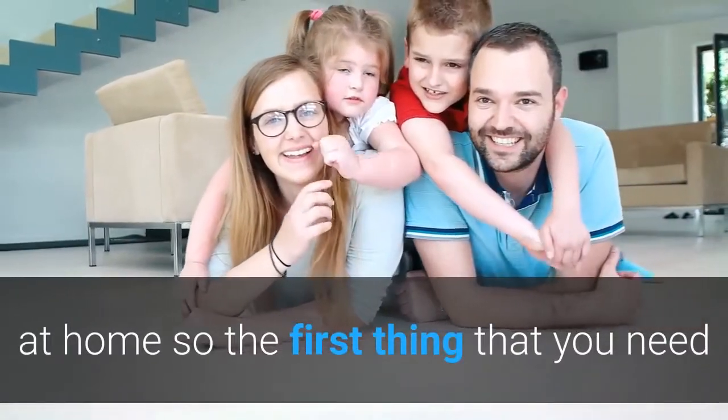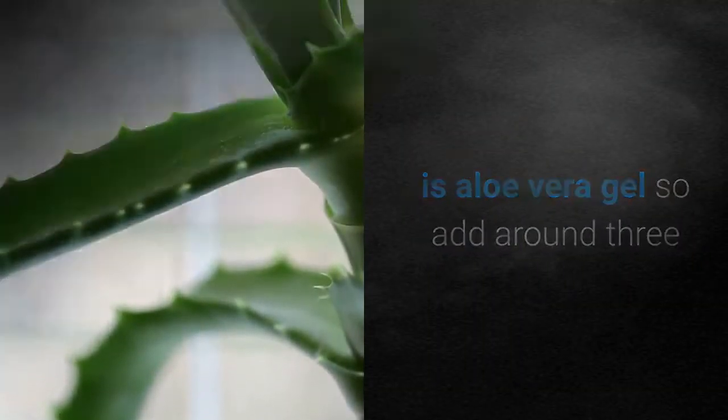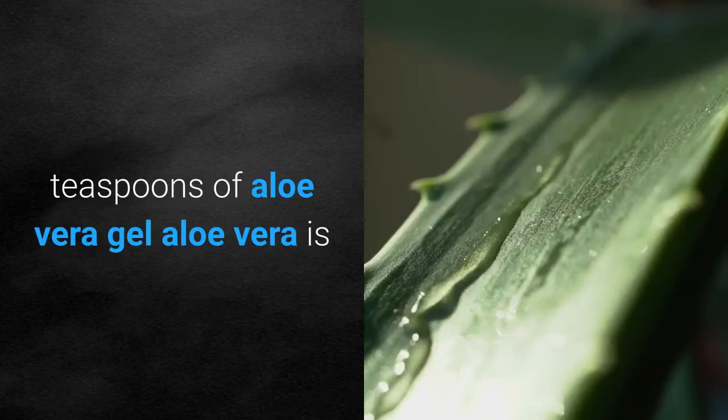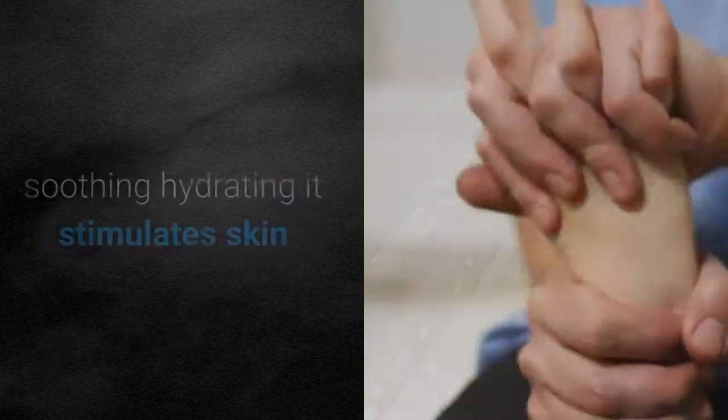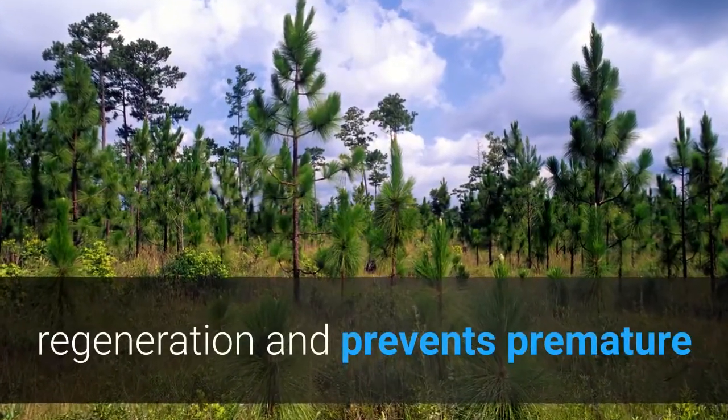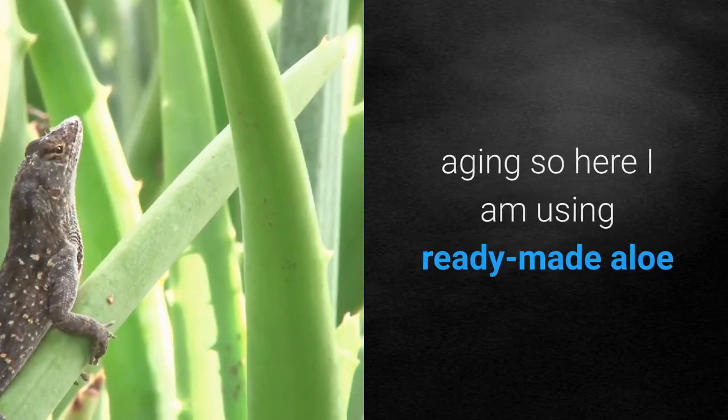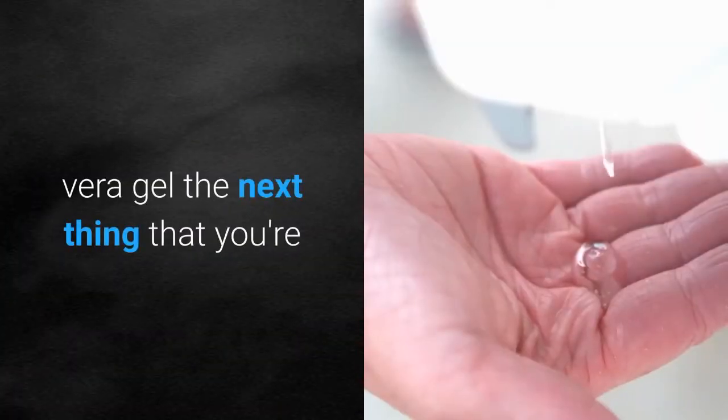The first ingredient you need is aloe vera gel. Add around three teaspoons of aloe vera gel. Aloe vera is soothing, hydrating, stimulates skin regeneration and prevents premature aging. I'm using ready-made aloe vera gel.